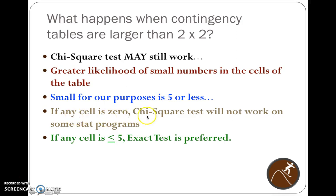And in some cases, if one of the cells is zero, some stat programs will reject the use of the chi-square test and tell you this isn't an appropriate test. So if any cell is less than or equal to five, we're going to do the Fisher's exact test. There are a variety of other exact tests out there, but Fisher's is the most commonly cited one, most commonly used one, to my knowledge.